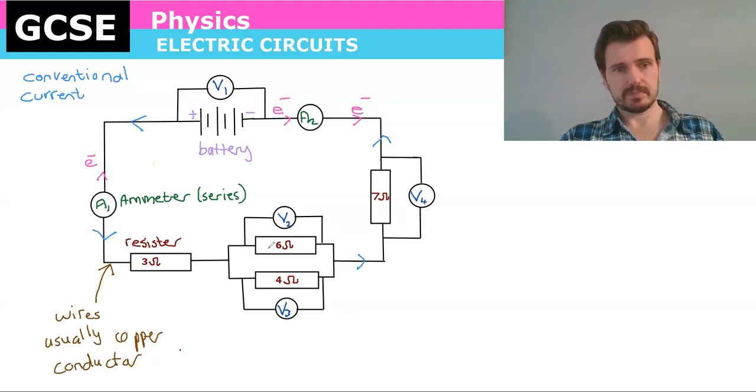Then we have a resistor, the three ohm resistor there, and now we also have voltmeters. Now these measure the potential difference which is in voltage. So that's a voltmeter here, these are all voltmeters: v1, v2, v3, and v4.